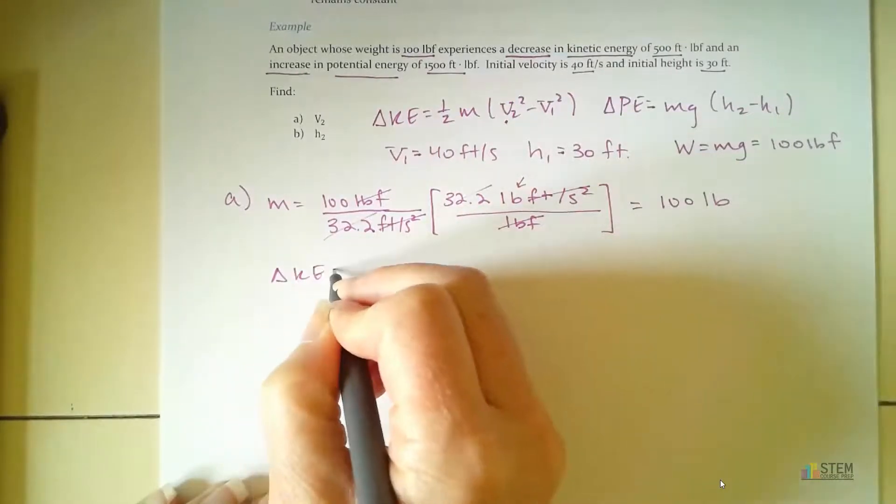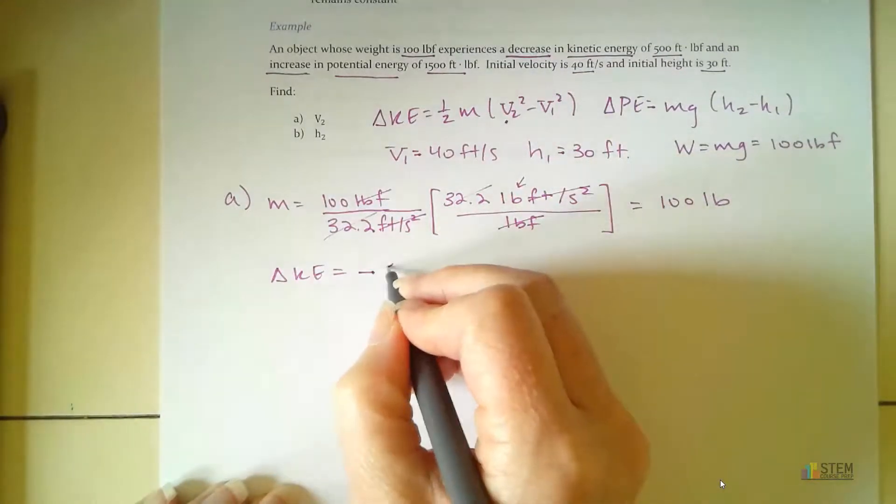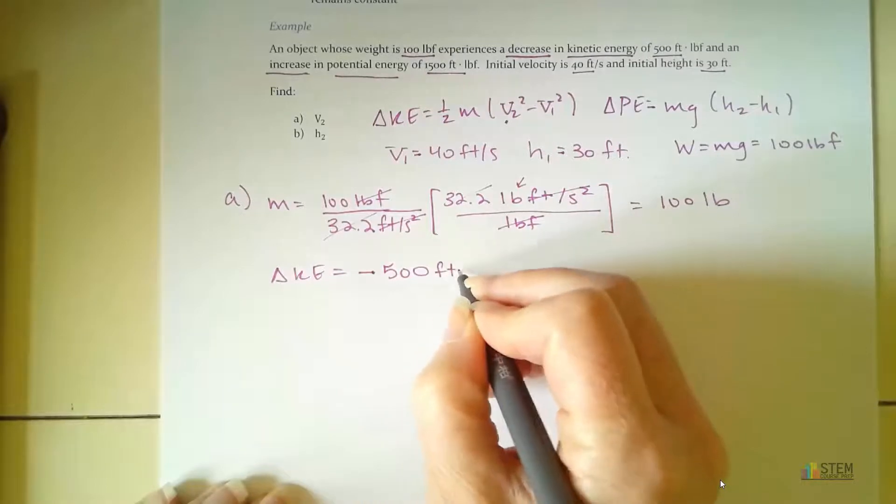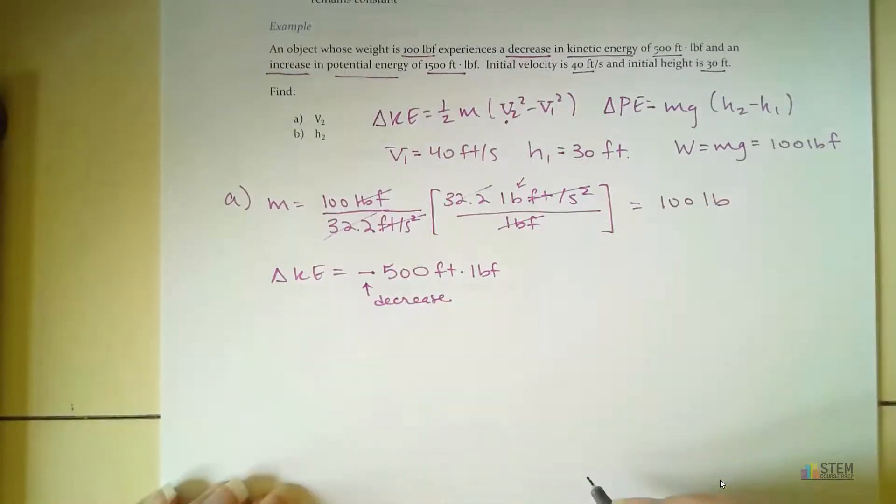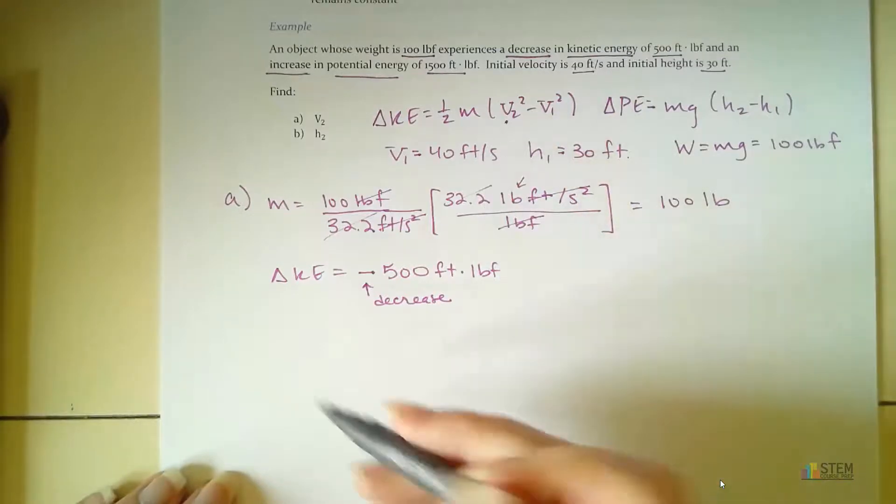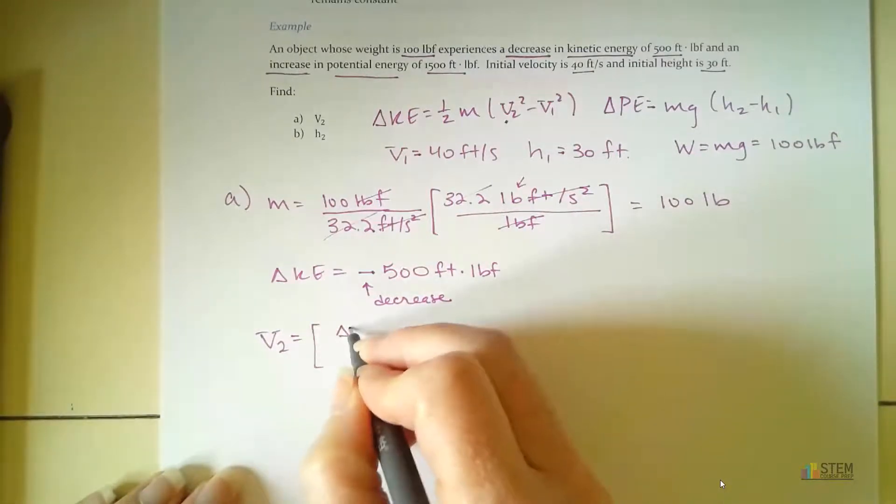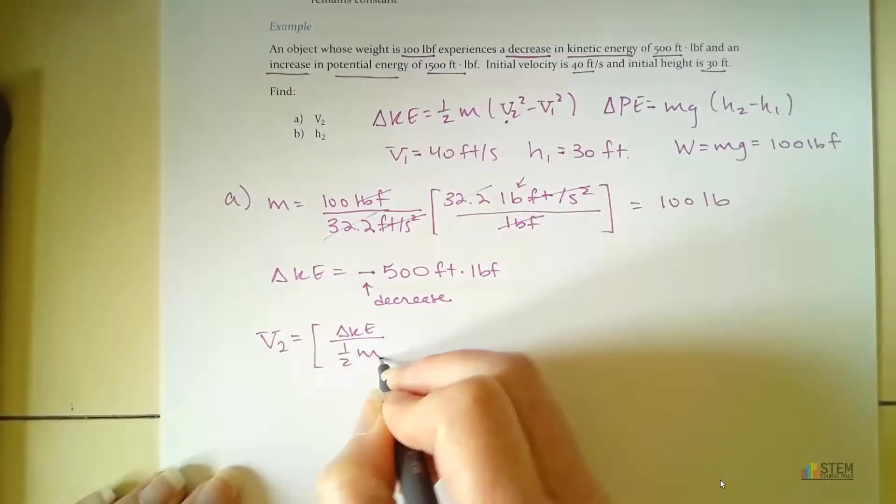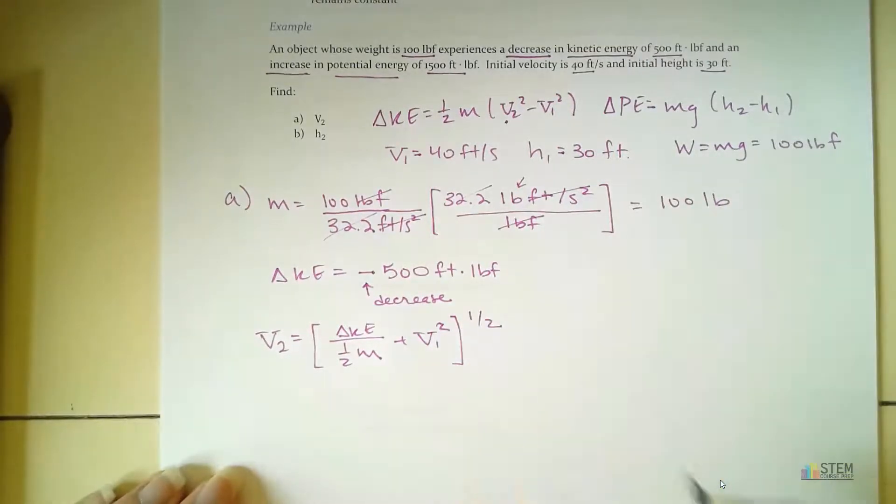So now we have our mass. Now let's look at our kinetic energy. So we were told we had a decrease in kinetic energy. So that means it was negative, because it's a decrease. And the magnitude was 500 foot-pound force. Now with that information, what we can do is we can take this equation and let's solve this equation for V2, because that's what we're wanting to find. So V2, once you solve for that, you're going to get your change in kinetic energy over one-half m plus V1 squared. And then you need to take the square root of that whole thing.